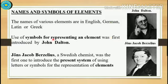Use of symbols for representing an element was first introduced by John Dalton. Jöns Jacob Berzelius, a Swedish chemist, was the first one to introduce the present system of using letters or symbols for the representation of elements.